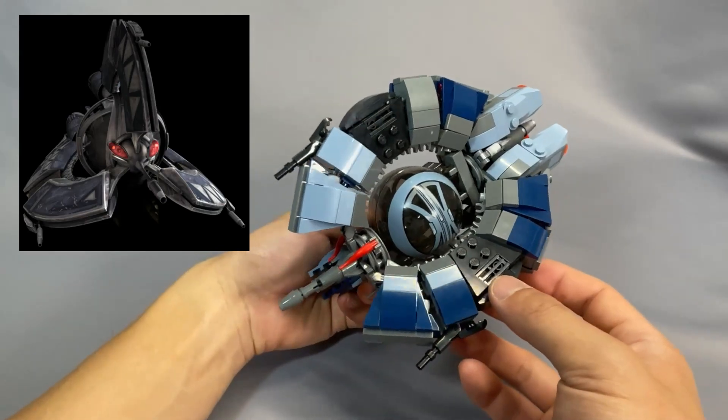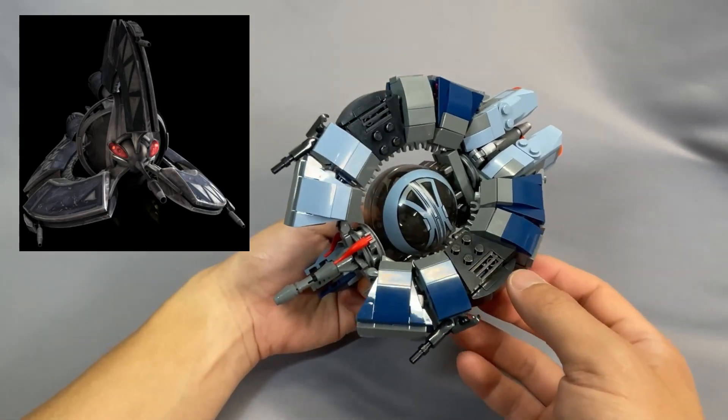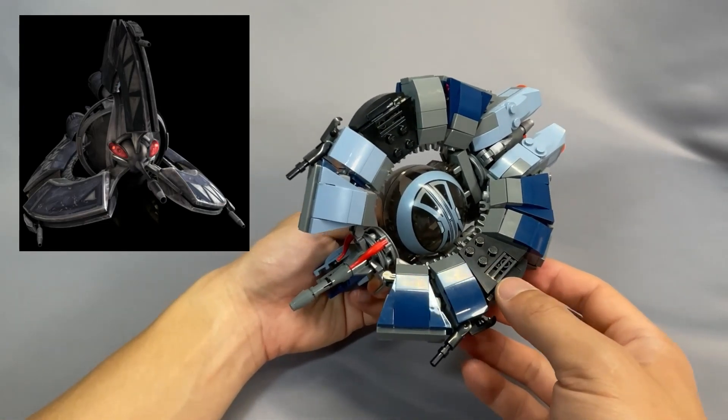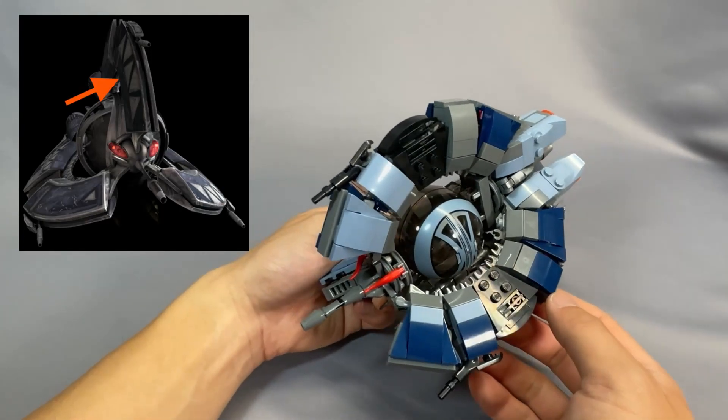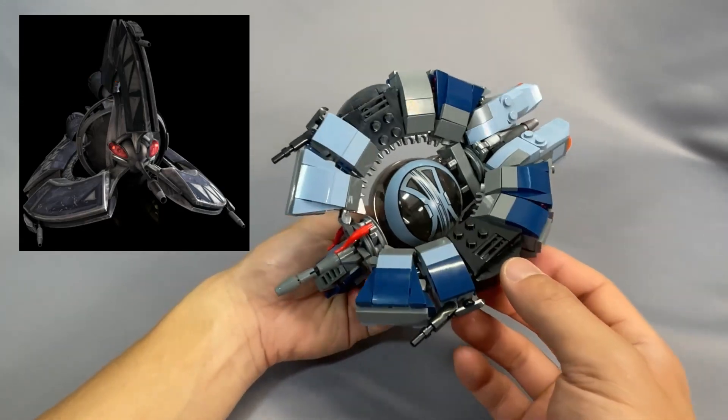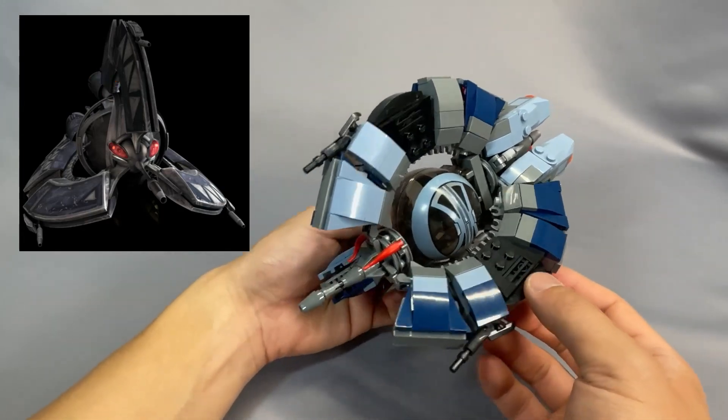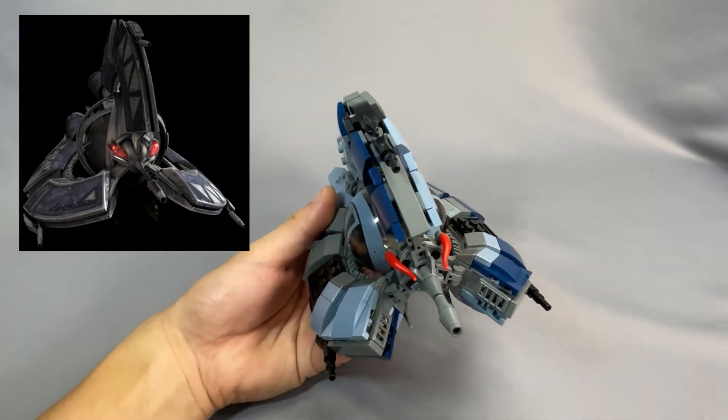There's also no good way to represent the CIS markings on the fins, specifically the interlocking triangle pattern that would appear on these two sections here. Without a sticker sheet, that's just not going to happen, and stickers are pretty expensive these days for the Tri-Fighter, so I did not buy them to try them out.